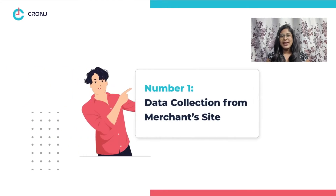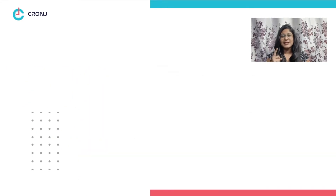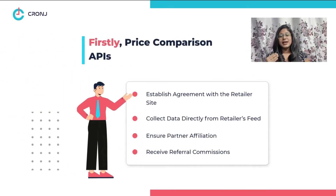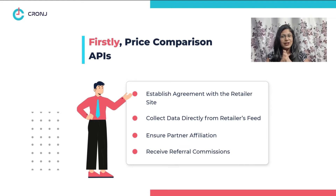Number one: data collection from merchant sites. Firstly, the price comparison API establishes an agreement with the retailer site such that they can collect data directly from their feed, as well as become affiliate partners to receive referral commissions.